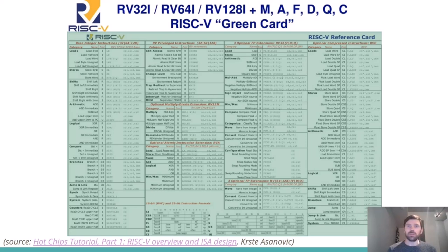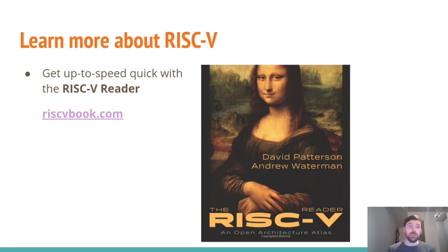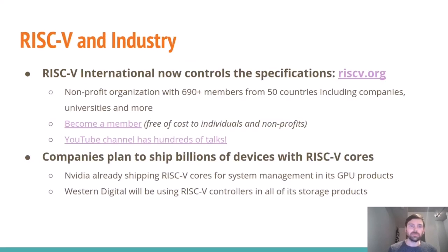Here are the base instruction sets along with the standard extensions on a reference card — it's nice to see it all in one place. Compared to something like Intel, you can see it's much easier to wrap your mind around RISC-V. If you want to learn more, including new extensions being worked on like Vector and Hypervisor, check out the RISC-V Reader. It's only about a hundred pages, available in several languages, and I really recommend a quick read through.